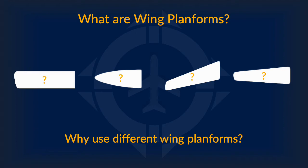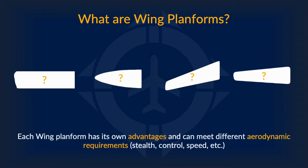So one may ask the question: why use different wing planforms? Why not just use one wing planform that is the best for everything? Well, the answer is that there is no best planform. Each planform is unique in that it gives its own advantages and can meet different aerodynamic requirements. This can be stealth, control, speed, and more.